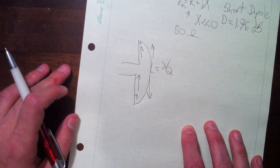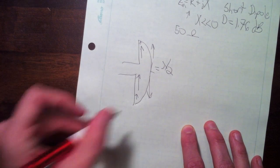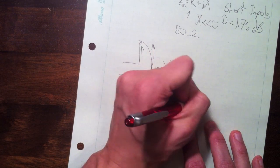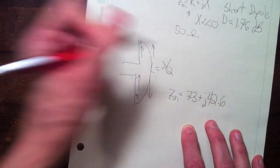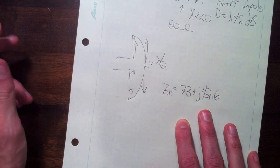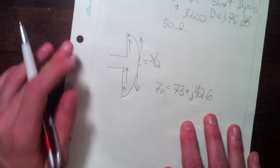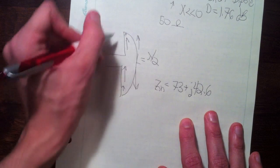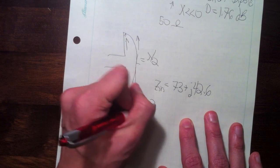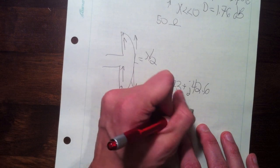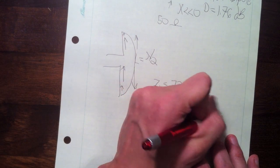The directivity of a half wavelength dipole is 2.15 dB. The impedance, if the wire is very thin, is something like 73 plus j42.6. We want to make the impedance real, which tends to minimize mismatch loss. So if you trim it back such that the length is about 0.48 lambda or so, you'll end up with an input impedance that's real, 70 ohms.